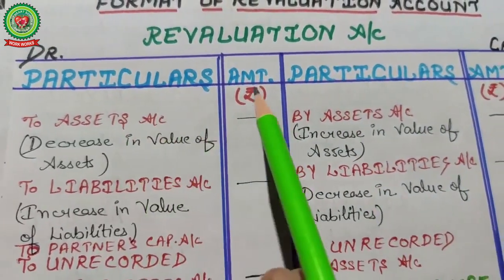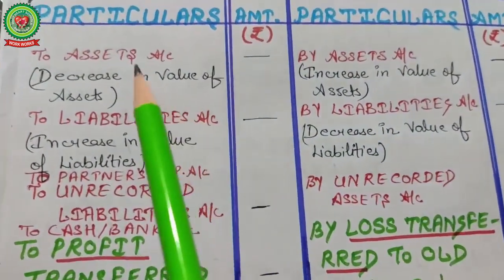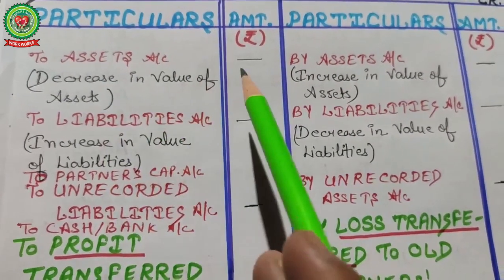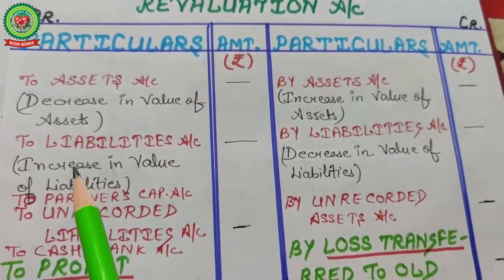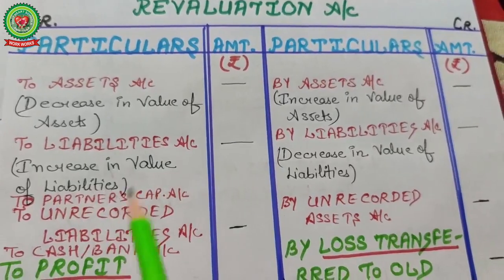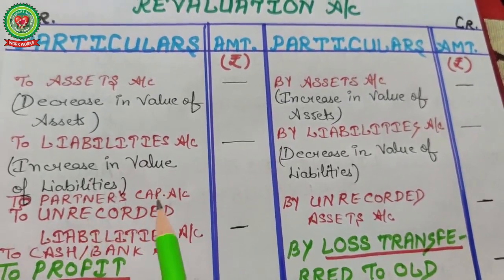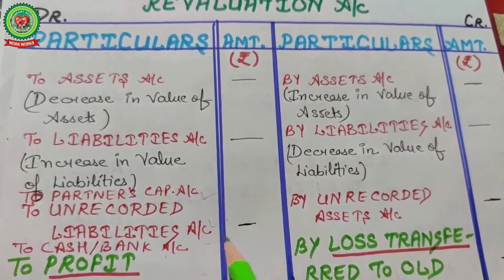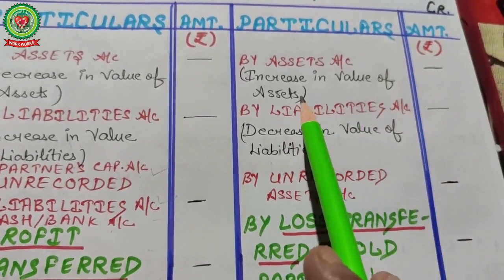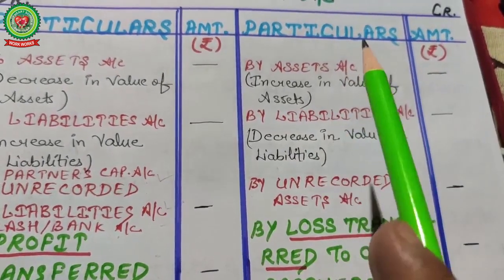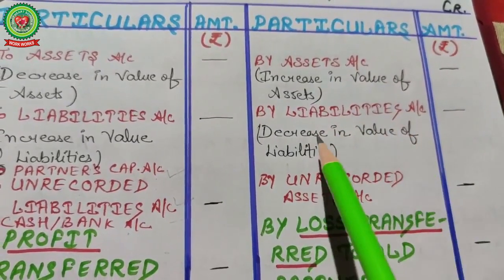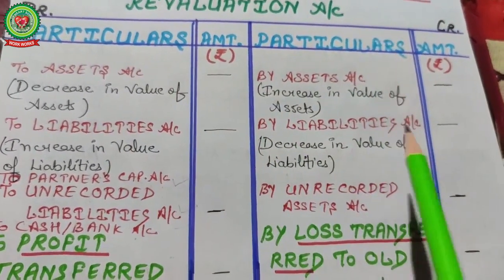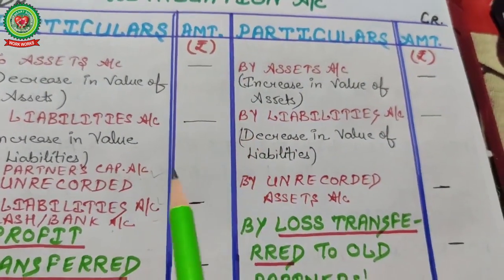The format of the revaluation account has two sides. On the debit side (negative side): decrease in the value of assets, increase in the value of liabilities, unrecorded liabilities, any cash or expense paid. On the credit side (positive side): increase in the value of assets — which increases profits — and decrease in the value of liabilities, and unrecorded assets. Just post the journal entries into the revaluation account.